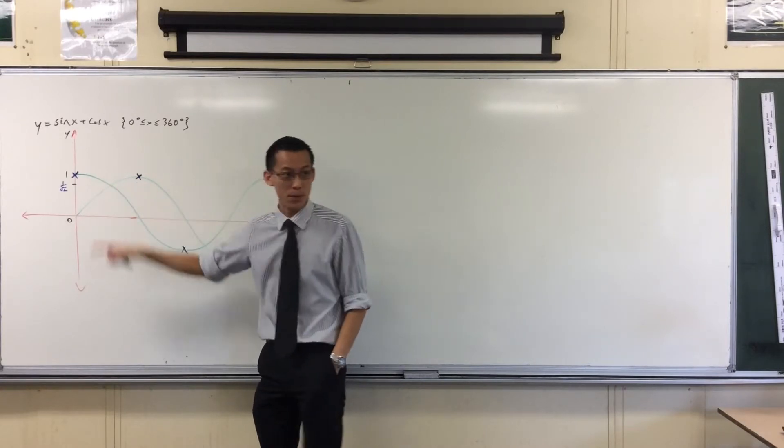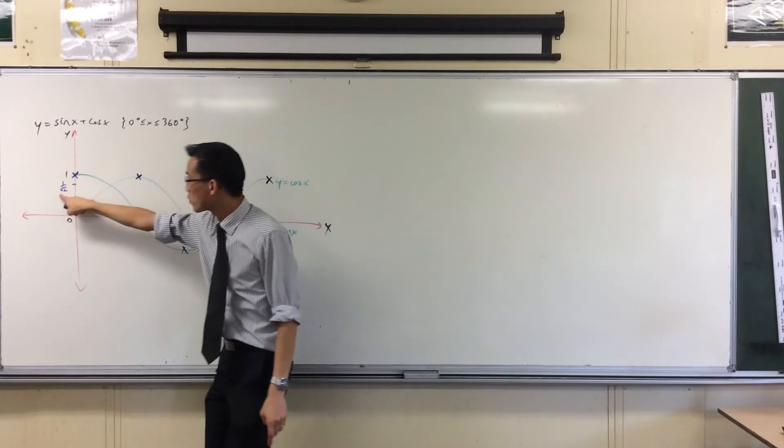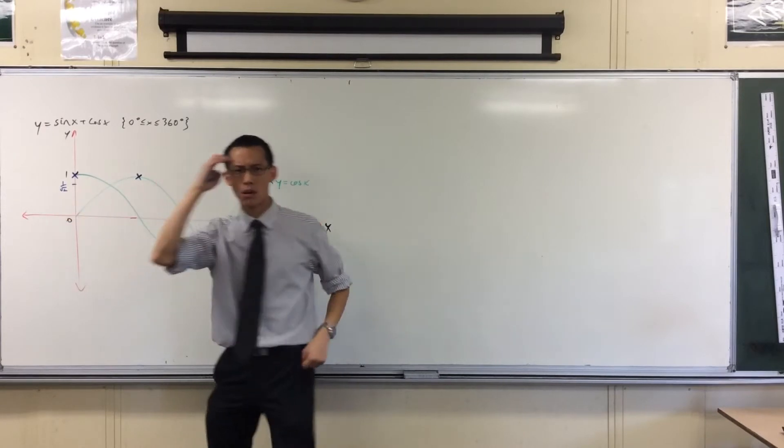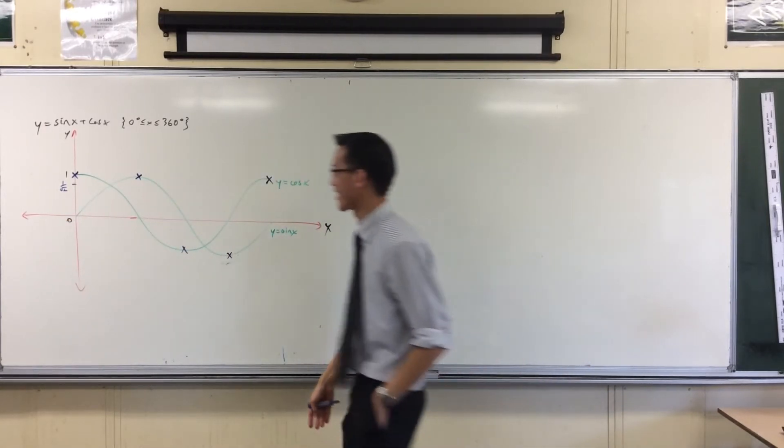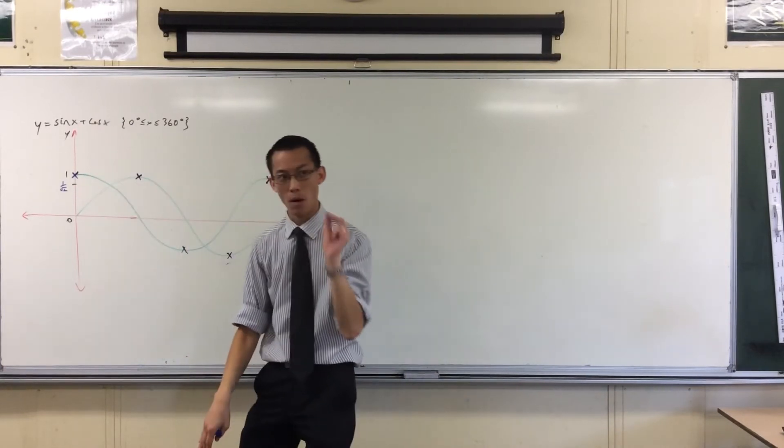So if I add two numbers that are both the same, it'll just be double. It'll be 1 over root 2 plus 1 over root 2, which is 2 over root 2. What's 2 over root 2? That's just root 2. So this is why I asked you to do some extra space up here. Root 2 is about 1.4.